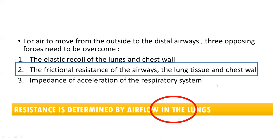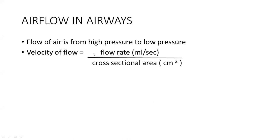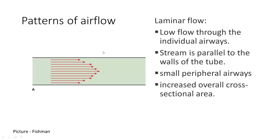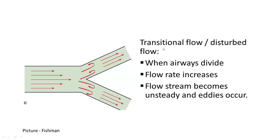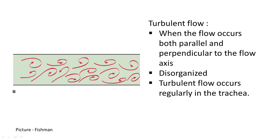Air always flows from high pressure to low pressure. The formula to remember is: velocity equals flow rate divided by cross-sectional area. Importantly, velocity is inversely proportional to cross-sectional area — as area decreases, velocity increases. The patterns of airflow are: first, laminar flow, which occurs in low-flow areas such as the smaller airways, where the stream is parallel to the tube walls; second, transitional flow, which occurs when airways divide and small eddy currents create disturbance; and third, turbulent flow, which occurs mainly in the trachea due to high velocity, where particles move perpendicular and parallel to the tube axis.